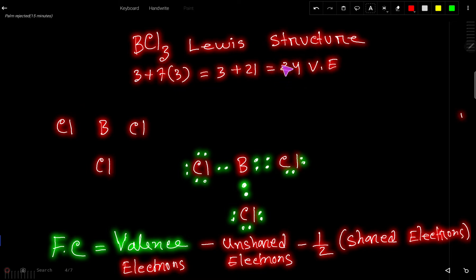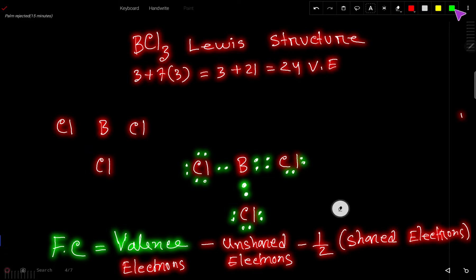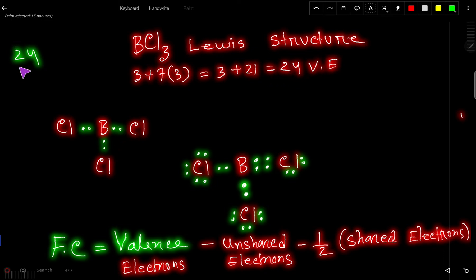These 24 valence electrons have two tasks. The first task is to connect all four atoms together, and the second task is to satisfy the octet for all the atoms. To connect the four atoms together we use two dots per bond, so we use 6 electrons. That leaves us with 18 valence electrons remaining.